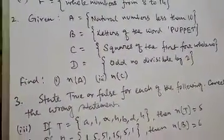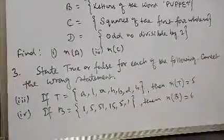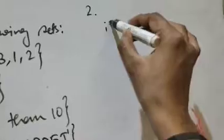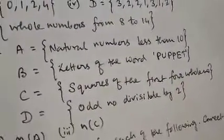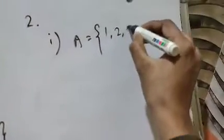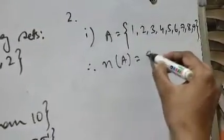Question number 2: four sets are given. Set A = natural numbers less than 10. Set B = letters of the word 'puppet'. Set C = squares of the first four whole numbers. Set D = odd numbers divisible by 2. For set A, natural numbers start from 1, so the elements are 1, 2, 3, 4, 5, 6, 7, 8, 9. Less than 10 means we do not include 10. Therefore n(A) = 9.